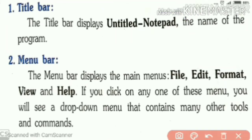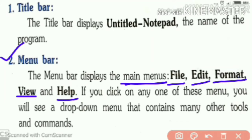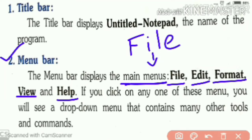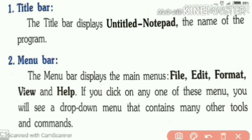Second, the menu bar. The menu bar displays the main menus such as File, Edit, Format, View, and Help. If you click on any one of these menus, you will see a drop-down menu. For example, when you click on File, various options will appear. When you click on Edit, various options such as Cut, Copy, and Paste will be there. The drop-down menu contains many other tools and commands.